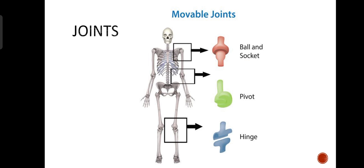There are actually three types of joints, but there are only two in your book. First is ball and socket — these joints can move, like the joints of your shoulders. The second type is the pivot joint, which cannot move at all, like the joint of your skull. The third type is the hinge joint, like your hand joint, which moves back and forth only — it cannot move in all directions. So the three types of joints are: ball and socket, pivot, and hinge joint.